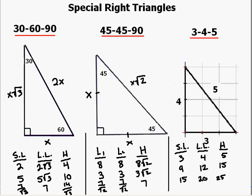If the short leg is 27 — that's 3 times 9 — then the long leg would be 4 times 9, which is 36, and the hypotenuse would be 5 times 9, which is 45. You can see they're all multiples of 3, 4, and 5. Multiply 3 by 3: get 9; multiply 4 by 3: get 12; multiply 5 by 3: get 15. Multiply 3 by 5: get 15; 4 by 5: get 20; 5 by 5: get 25. Multiply 3 by 9: get 27; 4 by 9: get 36; 5 by 9: get 45. These relationships easily help you find the missing sides of special right triangles.